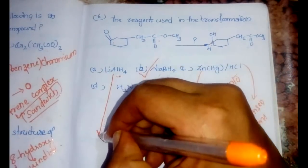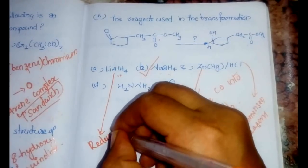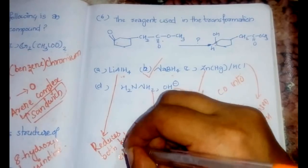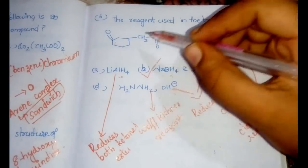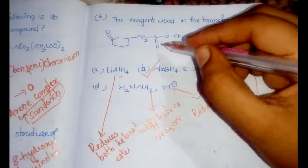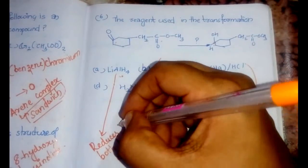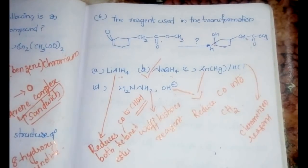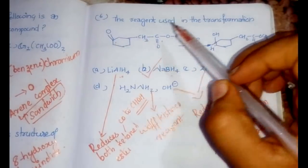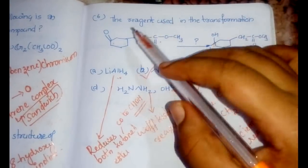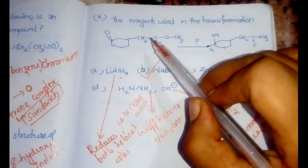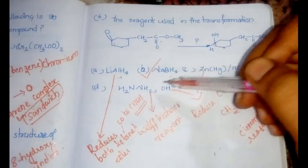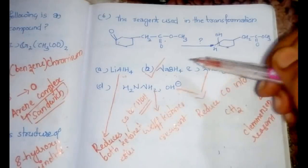Definitely our answer is NaBH₄, because it is selective and reduces only ketones and aldehydes. In our reaction, only the ketone got reduced to an alcohol while the ester carbonyl remained. So when solving reagent identification questions, carefully compare reactant and product to identify the changes, then match to the options.